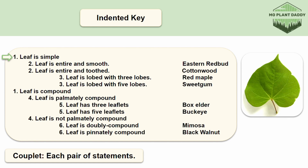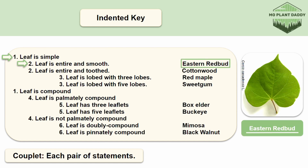Couplet 2 again gives us two options. This time it is asking whether our leaf is entire and smooth or entire and toothed. Our leaf is entire and smooth, therefore, based on the key, this leaf is eastern redbud, otherwise known as Cercis canadensis.